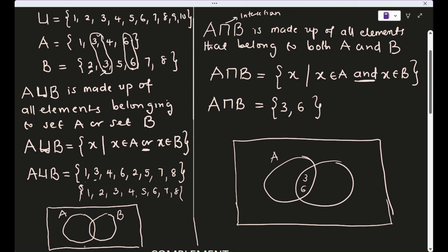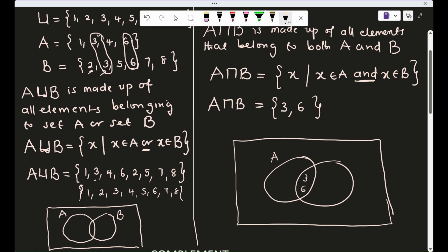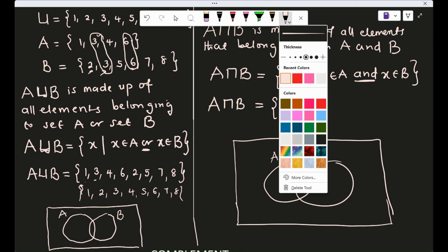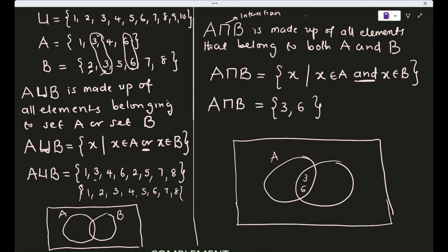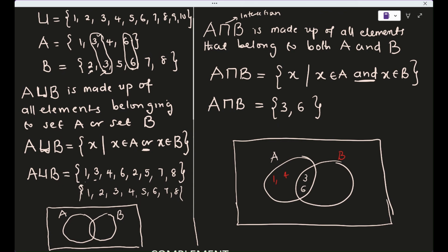With 3 and 6 in the intersection, what remains in A only is 1 and 4. For B, the remaining elements outside the intersection are 2, 5, 7, and 8.